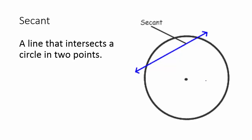Secant: a line that intersects a circle in two points. The difference between a secant and a chord is that the secant actually goes all the way through the circle. Remember, this is a line and lines go on for infinity. A chord has endpoints — it's a segment and will end at the circle — whereas a secant will go all the way through.